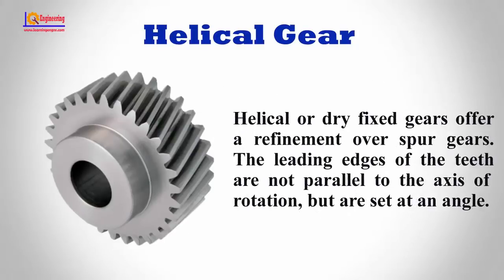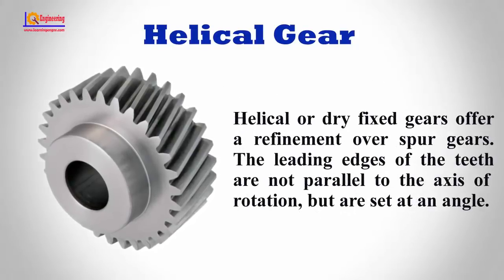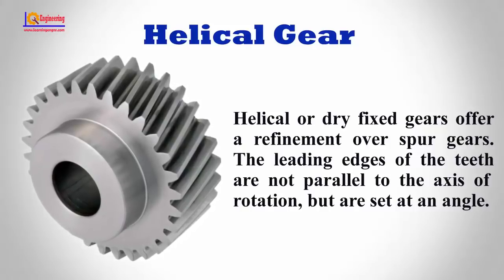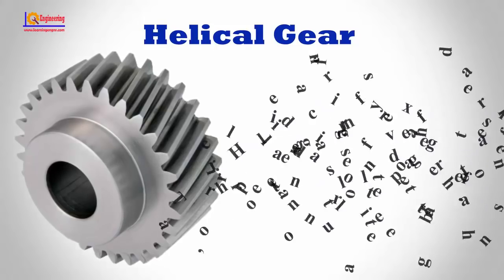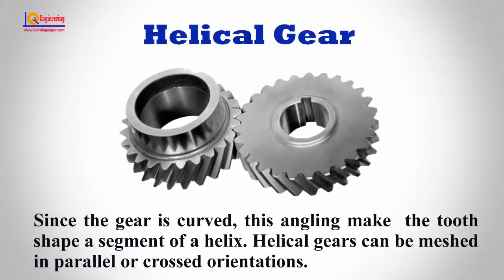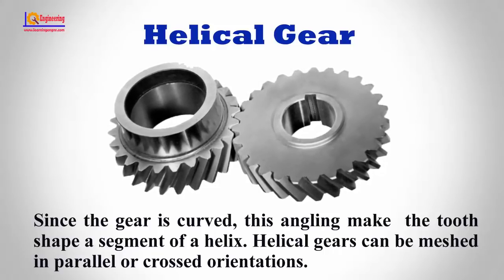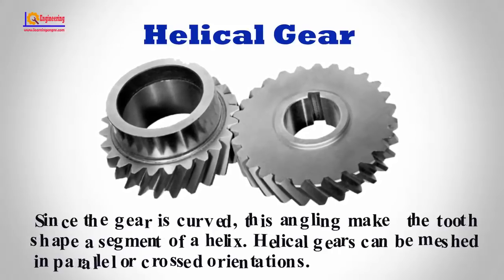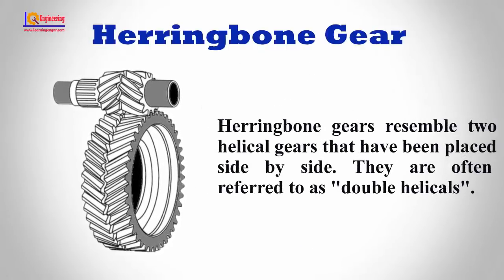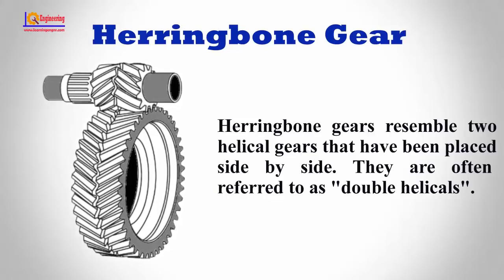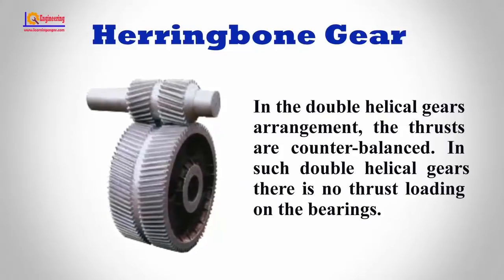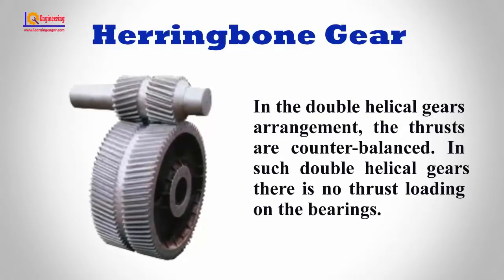Helical Gear. Helical gears offer a refinement over spur gears. The leading edge of the teeth are not parallel to the axis of rotation but are set at an angle. Since the gear is curved, this angling makes the tooth shape a segment of a helix. Helical gears can be matched in parallel or crossed orientations. Herringbone gears resemble two helical gears that have been placed side by side, and are often referred to as double helicals. In the double helical gear arrangement, the thrusts are counterbalanced, so there is no thrust loading on the bearing.